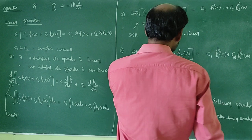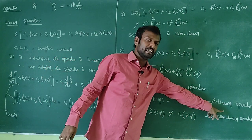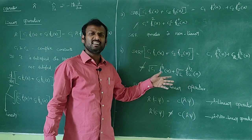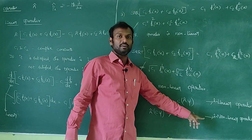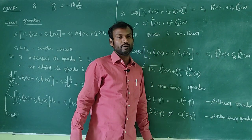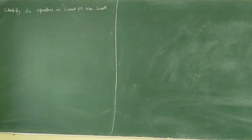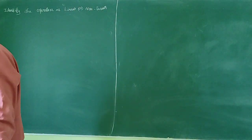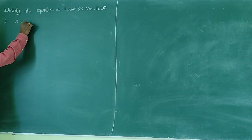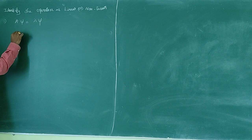So if the conditions are satisfied, the operator A-cap is a linear operator. If the conditions are not satisfied, A-cap is a non-linear operator. To identify an operator as linear or non-linear, first if A-cap(ψ) equals λψ — a constant times ψ — we apply the conditions.